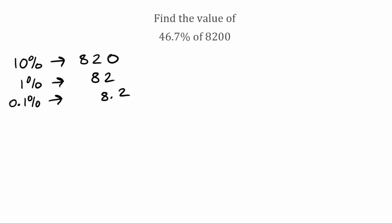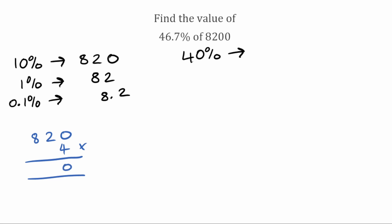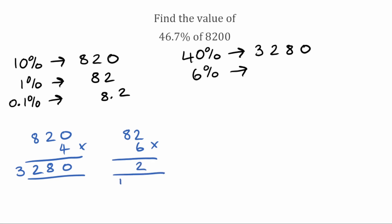Now we're going to find the multiples of these that we need. Looking at 46.7%, in the tens column we've got 40%. To find 40%, we take our 10% value of 820 and multiply by 4: 0 times 4 is 0, 4 times 2 is 8, and 4 times 8 is 32 — so 40% is 3,280. In our units column we need 6%, so we take our 1% value of 82 and multiply by 6: 6 times 2 is 12, carry 1; 6 times 8 is 48, add 1 is 49. So 6% is equivalent to 492.